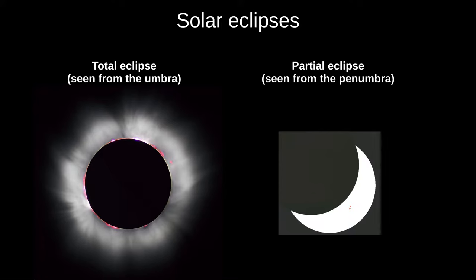On the right is a partial eclipse. It's just possible to make out some features of the Moon, from light reflected by the Earth.